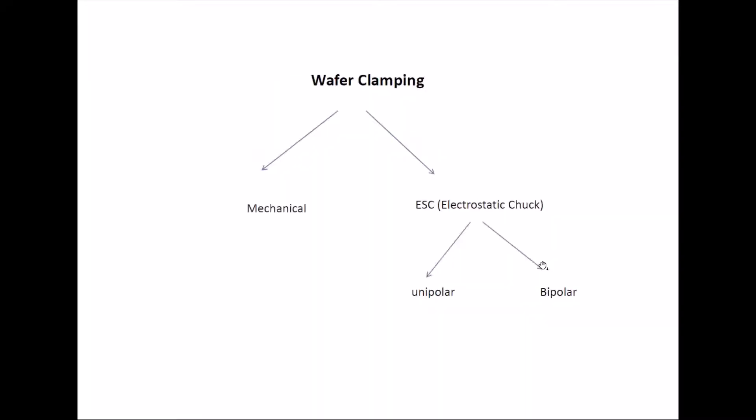Now, let's come to the clamping part. So the clamping is done in two ways. One is mechanical clamping, another one is electrostatic clamping. Electrostatic clamping has another two types, unipolar and bipolar. So the mechanical clamping is very simple.